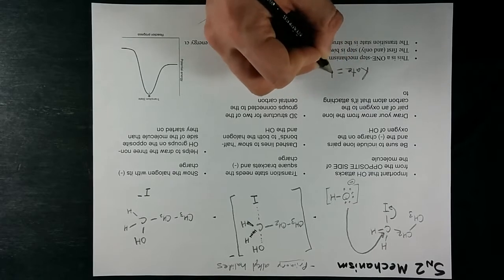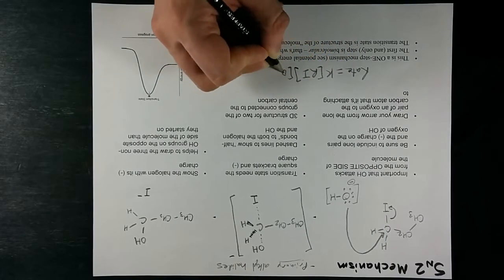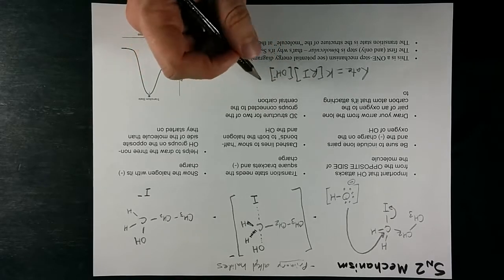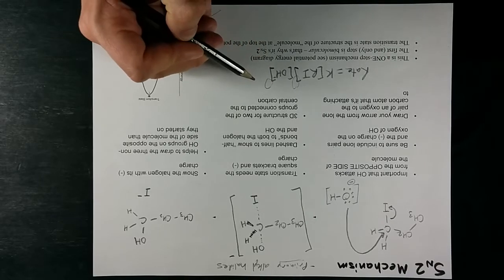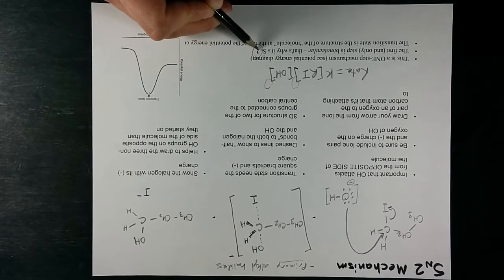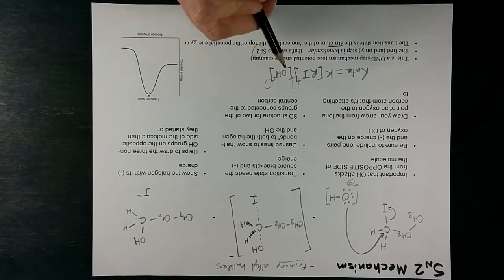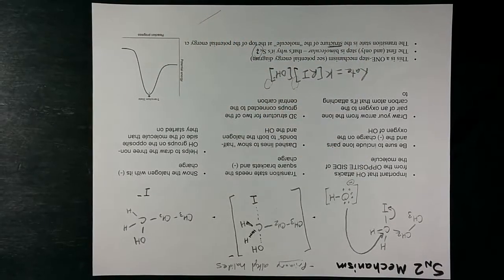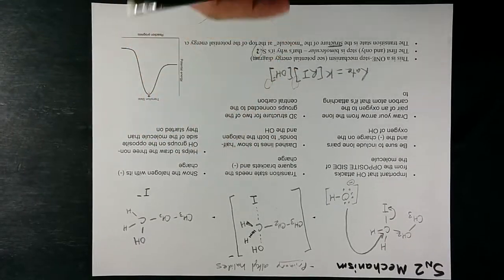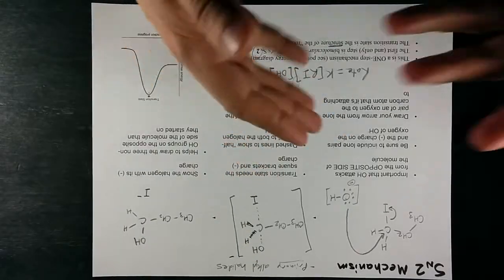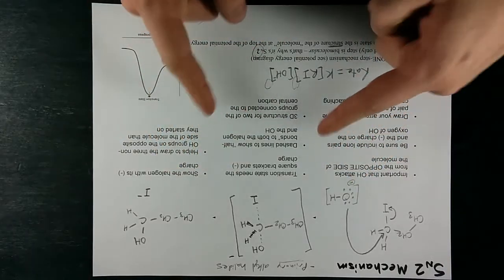If you had to create a rate law for this, rate equals K times alkyl halide times the nucleophile concentration. The overall order here is 1 plus 1, that's where we get the 2 for SN2. It is a bimolecular, slowest rate determining step, even though there's only one hump in the potential energy curve. Don't get it twisted, all right? That's SN2. Compare it to SN1. Do your thing, be an organic chemist, and best of luck.